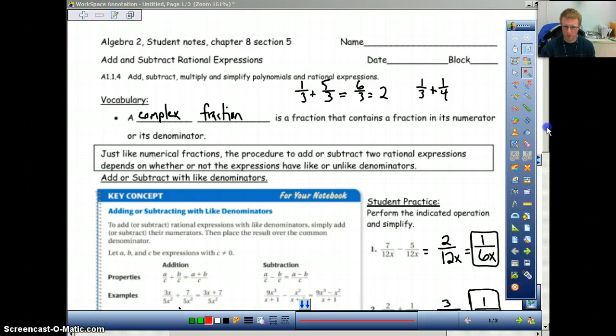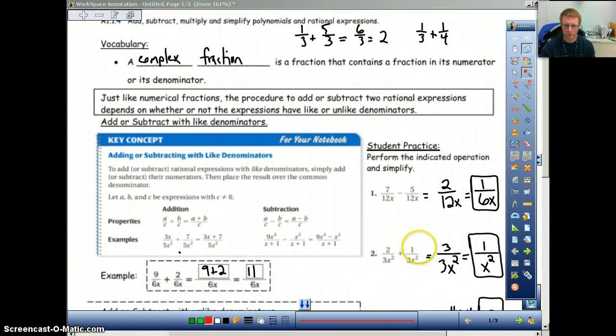Okay, so make sure we're clear about that. Next one, two plus one is three. Three over 3x squared. The threes cancel out, so we're left with one over x squared. Again, when the threes cancel out, this is not zero, it's one, and then the x squared stays on the bottom.